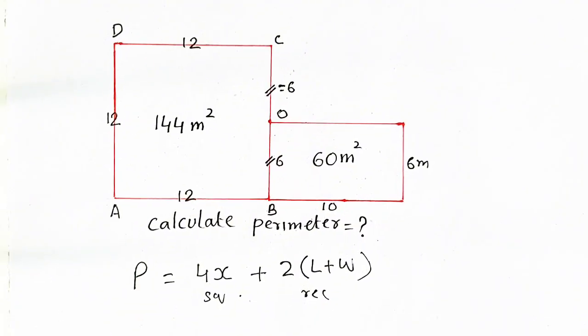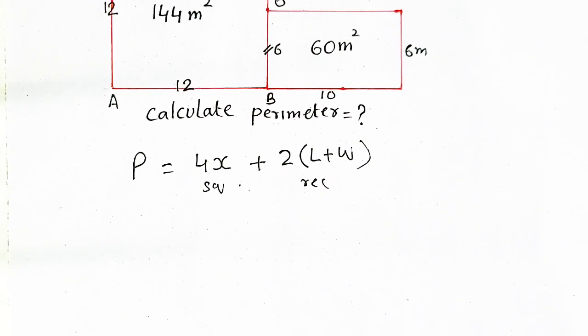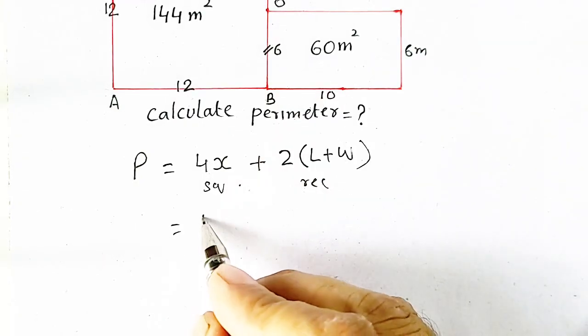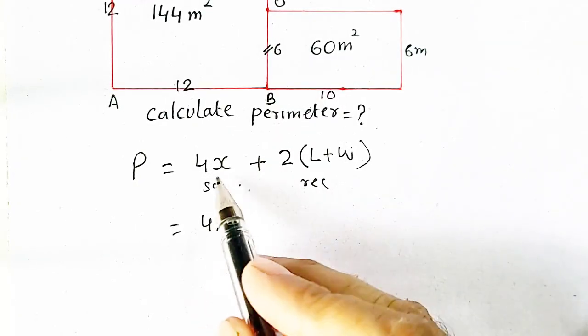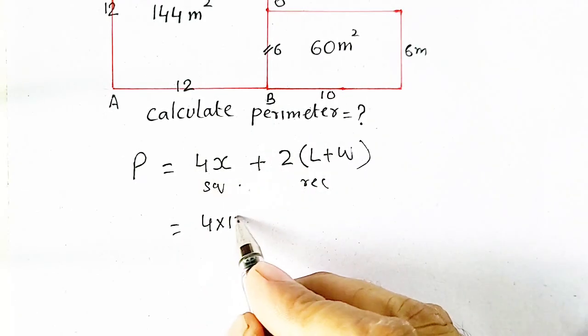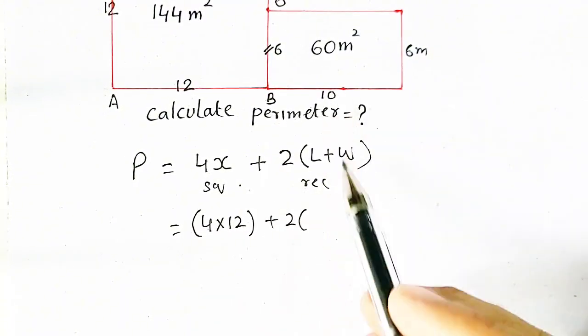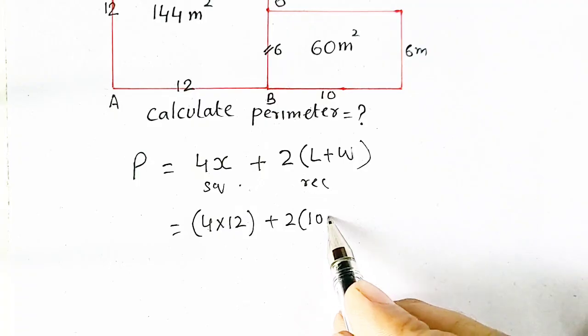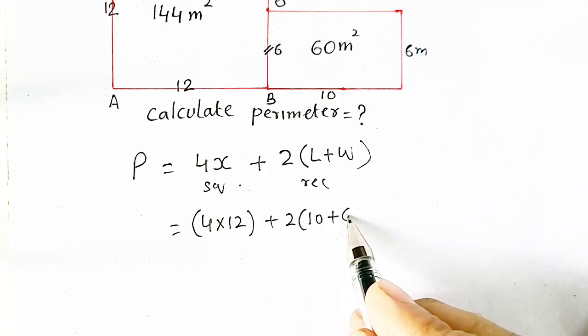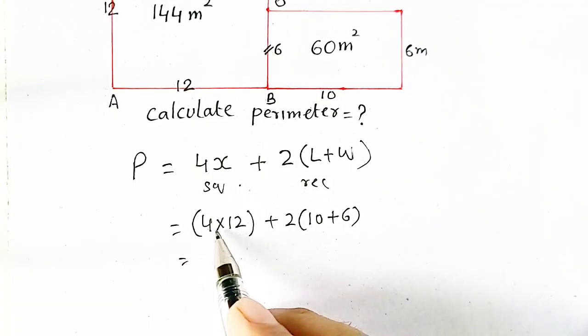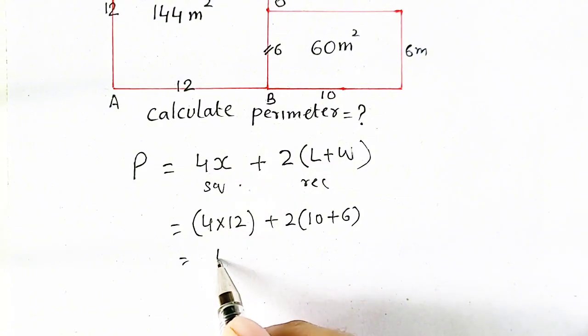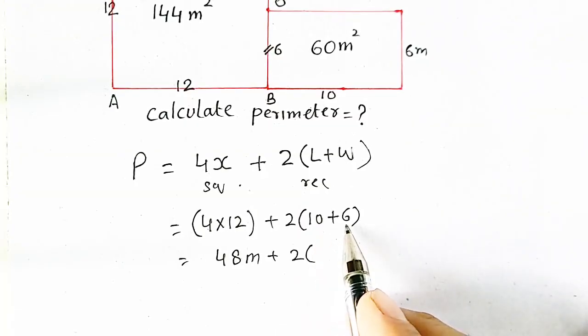So now we have to calculate the value. So 4 times x will be equal to 12, plus 2 times length will be equal to 10, and width is equal to 6. So 4 times 12 will be equal to 48 meter, plus 2 times 10 plus 6, it is 16.